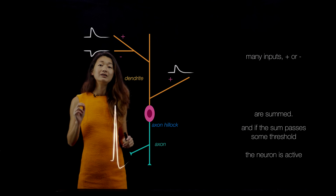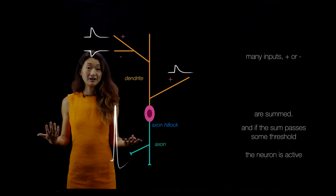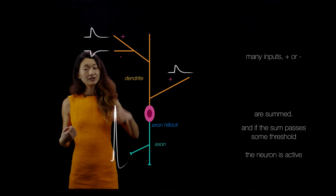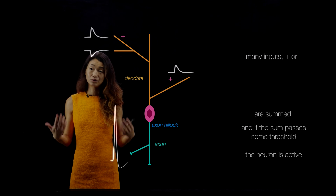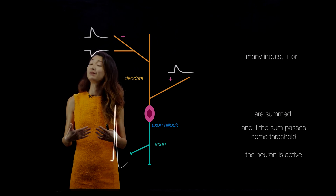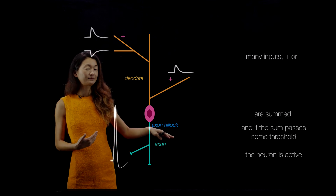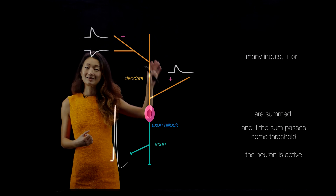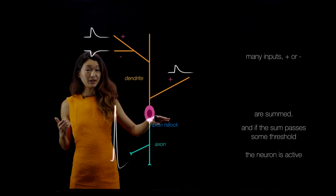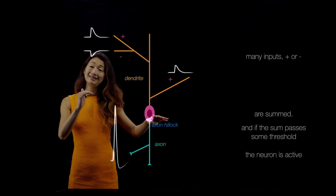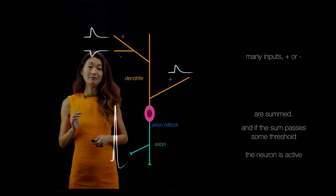Conversely, the neuron can only fire action potentials so fast. There is a limit to how fast it can fire because the voltage-gated sodium and potassium channels need time to recover, and the local electrical gradient of the respective ions must return to resting concentrations before another action potential can be generated. So a neuron is a device that sums positive and negative inputs, passes them through a threshold, and also has a ceiling on its activity.